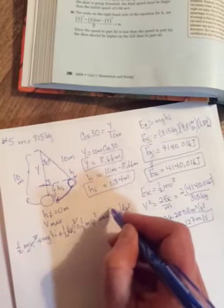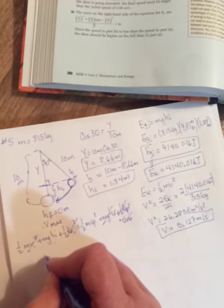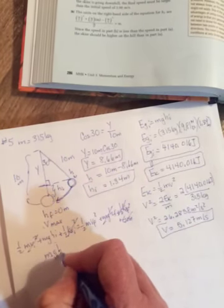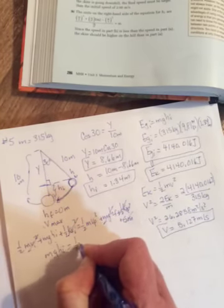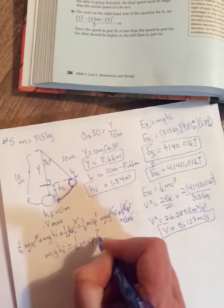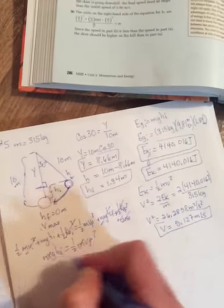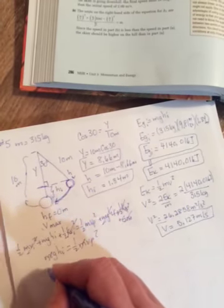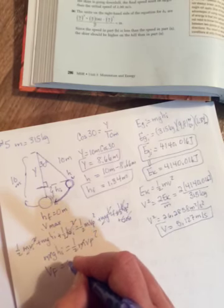Here at the bottom, it has a speed, no height, no spring. So you have mgh i equals 1/2 mv f squared. The m's will cancel. You're looking for the speed at the bottom. Multiply both sides by 2.